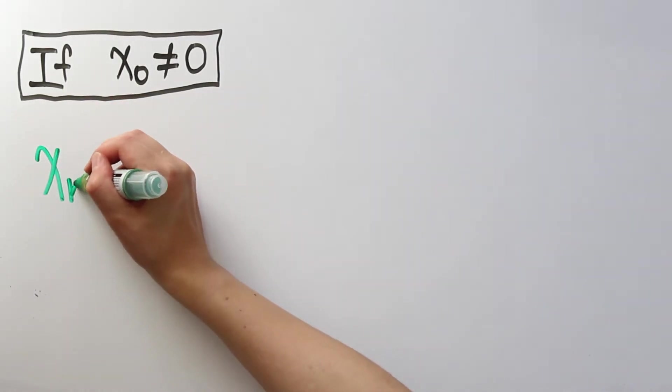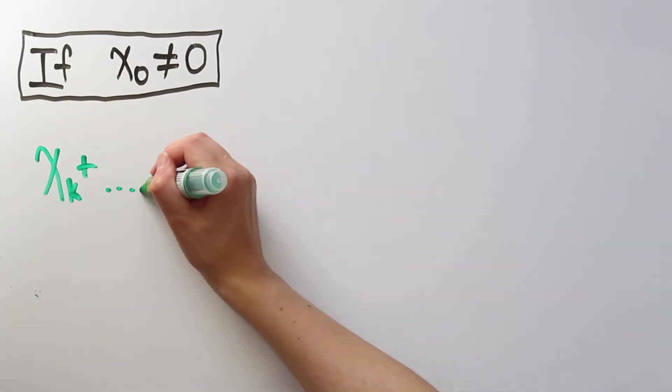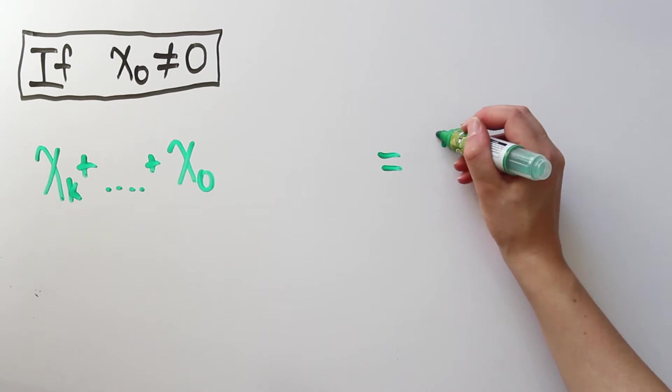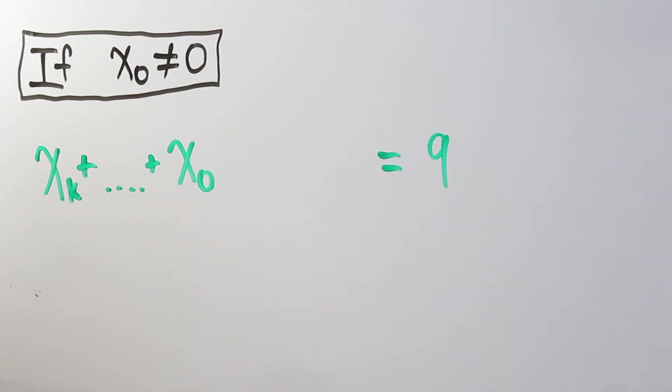Let's consider the sum of the new digits now. Like in the other case, we already know that the old sum, xk plus xk minus 1 plus all the way to x0, is a multiple of 9.